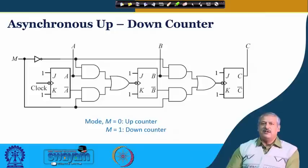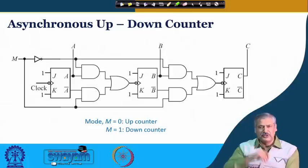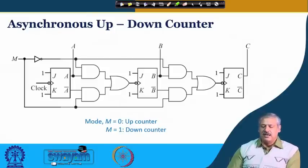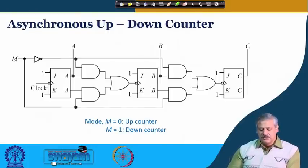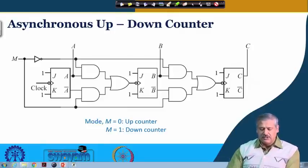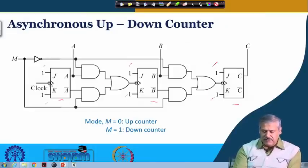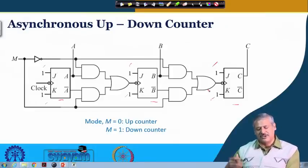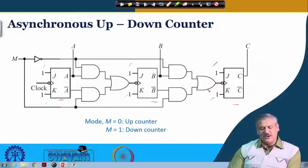Having understood how up and down counters work in asynchronous counters, can we have one circuit that can work as both up and down counter, switchable depending on our requirement? Here is a circuit: flip-flops A, B, C are there with J and K inputs both at 1 so each will toggle on every available clock. We have added an additional input M, which can be considered a mode control input.